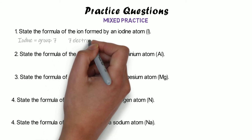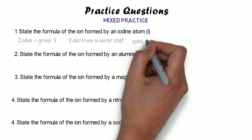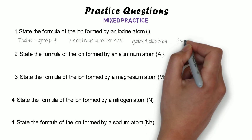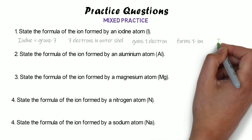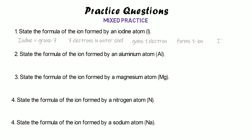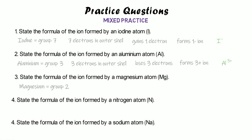Iodine is in group seven — seven electrons in its outer shell — so it gains one electron and forms a 1− ion. The formula is I⁻. Aluminium is in group three — it could gain five or lose three, and it's easier to lose three — so it forms a 3+ ion: Al³⁺. Magnesium is in group two — it's easier to lose its two electrons than to gain another six — so it becomes a 2+ ion: Mg²⁺.